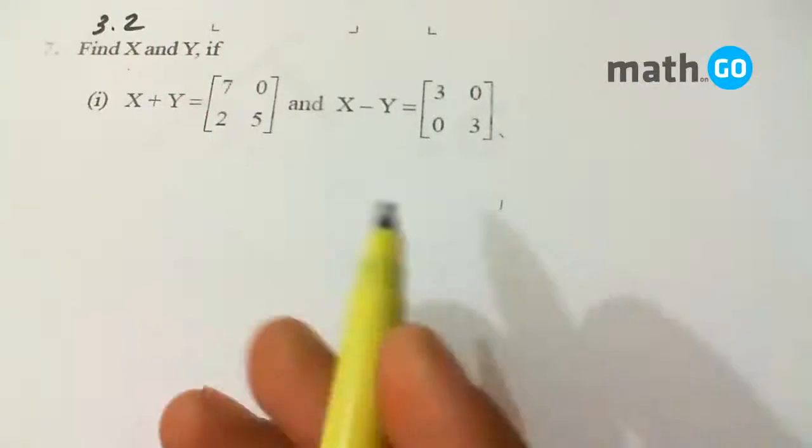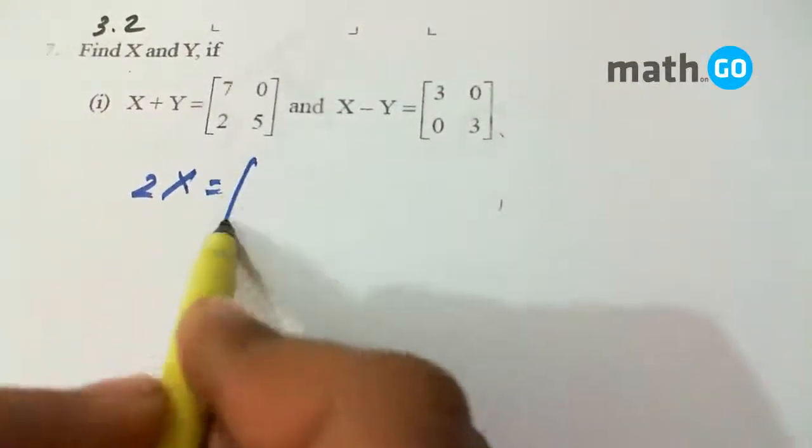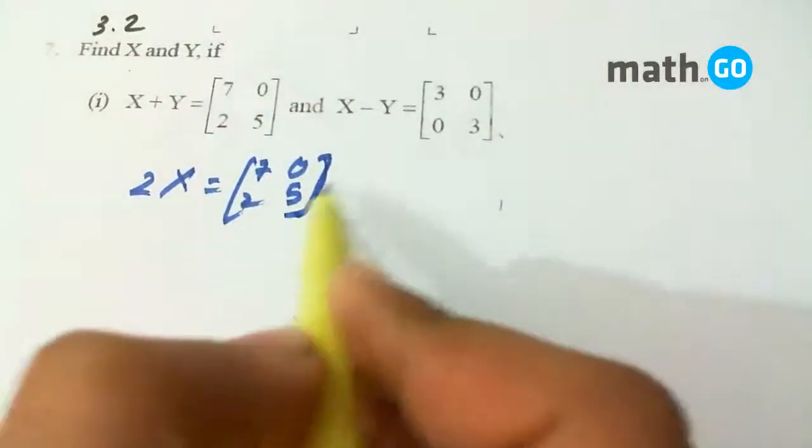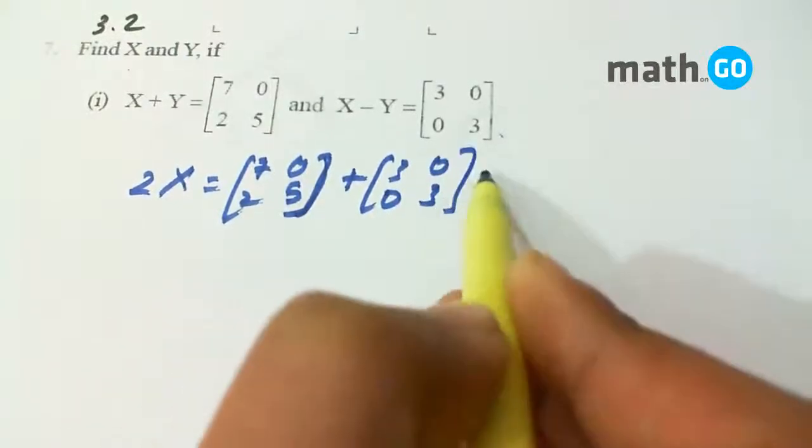Suppose we add both these equations, we get 2X equals to [7, 2, 0, 5] plus [3, 0, 0, 3], simple.